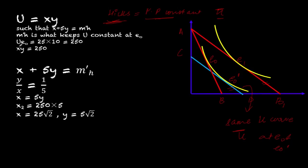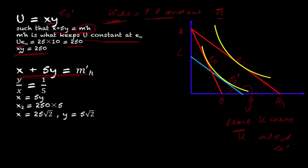For the Hicks numerical, we know utility equals XY and we need to find e0-dash. The constraint is not income — we are constrained by utility. Utility at e0 is 250, so we have xy equals 250. We minimize expenditure subject to this constraint, or equivalently apply MRS equals price ratio along with the utility constraint. Solving gives us the Hicks e0-dash. In later videos we apply the same Hicks and Slutsky decomposition analysis to perfect substitutes, perfect complements, quasi-linear functions, and more.